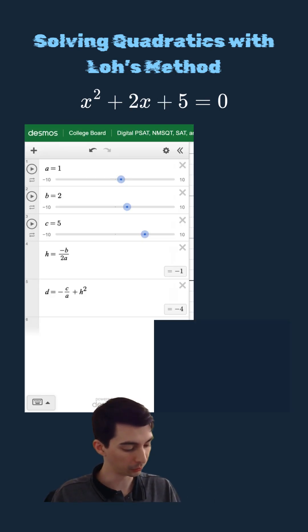And so now my solutions are x equals my axis of symmetry plus and minus the square root of the distance that I found. So in this case, x equals negative 1 plus and minus the square root of negative 4 can be simplified to 2i.